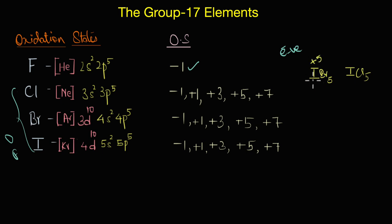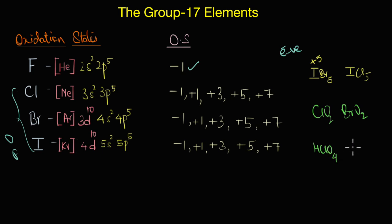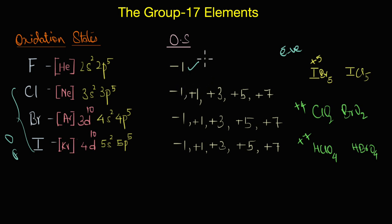For example, positive oxidation states are usually seen in interhalogen compounds like IBr5, ICl5, and so on, where the oxidation state of iodine is +5, as iodine combines with a more electronegative element than itself. Similarly, in oxides like ClO2 and BrO2, and oxoacids like HClO4 or HBrO4, halogens predominantly show +4 and +7 oxidation states. Fluorine, on the other hand, can show only the -1 oxidation state because it is the most electronegative element.